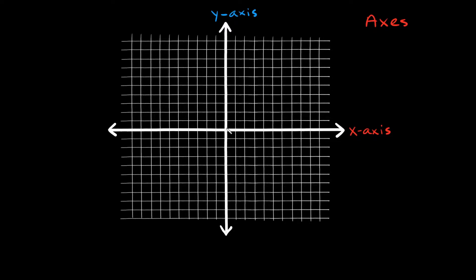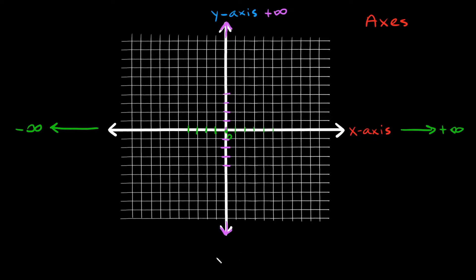On the x-axis, think of the middle part as where the number zero is. Going right, you have one, two, three, four, five, all the way to positive infinity. Going the other direction, it's negative one, negative two, negative three, negative four, all the way to negative infinity. The y-axis works the same way — going up is positive and going down is negative, again reaching positive and negative infinity.